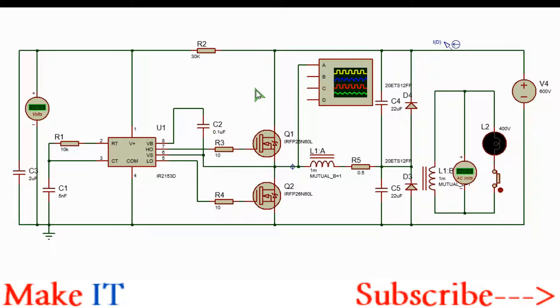The IR2153 is a half bridge driver IC which requires just a few components for biasing. For the power supply, you can rectify the mains depending on your region to obtain about 170 volts DC or 310 volts DC.